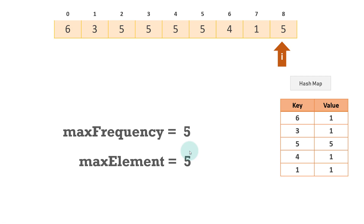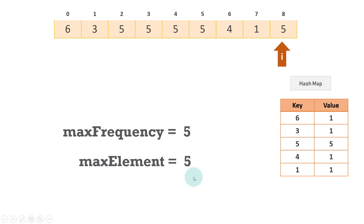So this is the algorithm. We'll move to each and every element in the array. We'll maintain a hash map. We'll check if the element is present in the hash map or not. If it is not present, we'll insert it. If it is present, we'll update the frequency. We'll check against the max frequency and max element stored previously. If the new frequency is greater than that, we will update the max frequency and max element. So we'll try to code this inside our Eclipse IDE.